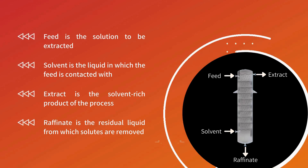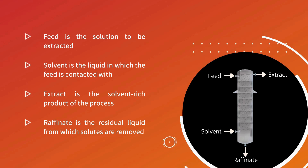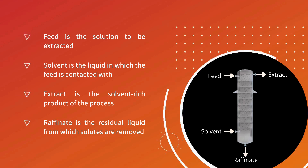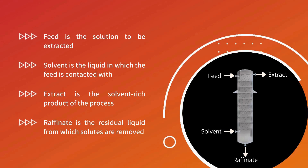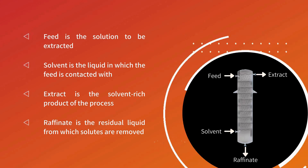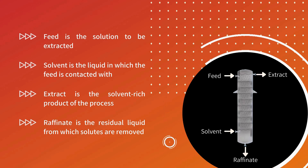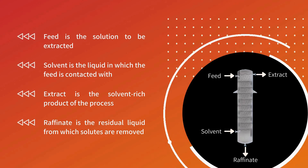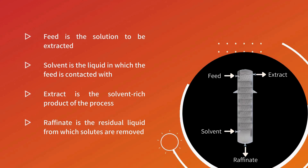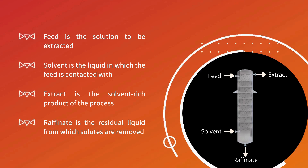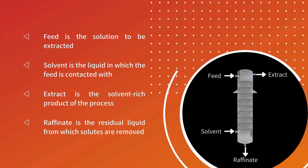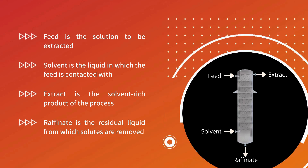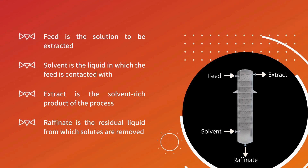In some operations, when solutes are the desired product, the extract stream is the desirable stream. On the other hand, when solutes are contaminants to be removed, the raffinate is the desired product stream.